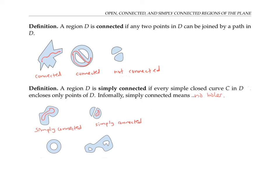This next region, which looks like an O, is not simply connected. That's because if I draw a simple closed curve that goes around the O, it will enclose points that don't lie in the region. Similarly, this last region is not simply connected. Again, if I draw a simple closed curve that surrounds one or both of the holes, then that simple closed curve will contain points in the holes that are not in the region D.